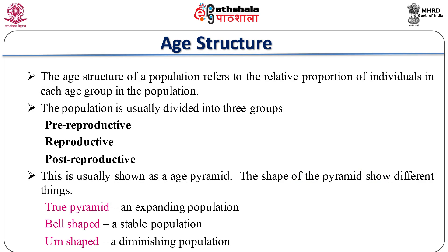Age structure is usually illustrated by an age pyramid — a graph in which horizontal bars represent the percentage of the population in each age group. Each age group is called a cohort. The longer a bar is, the greater the proportion of individuals in that age group.